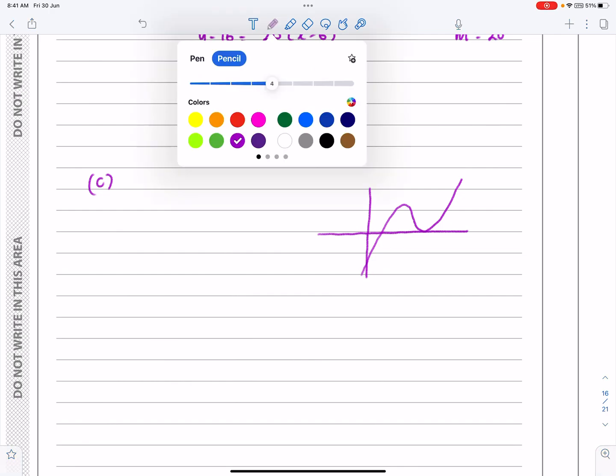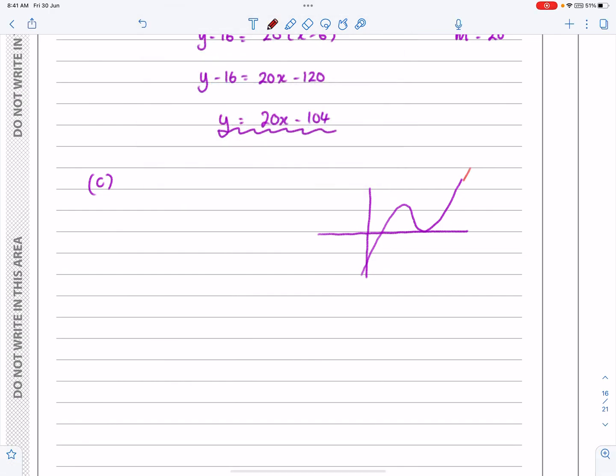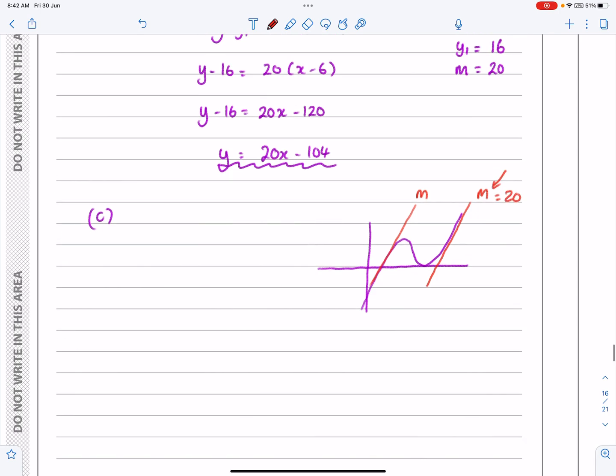Okay, so we've got this point now where x equals 6, and we've got some other point over here somewhere where it's the same. The one thing we can say is that the gradient here is going to be the same as the gradient there. And we know what the gradient there is because we've just worked it out. The gradient there is m equals 20.